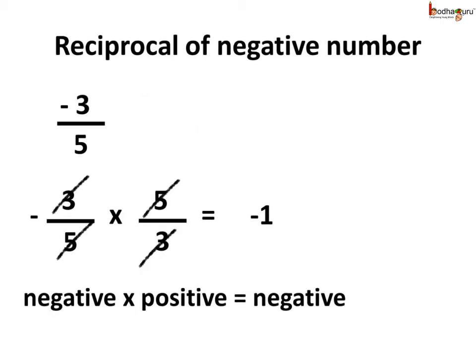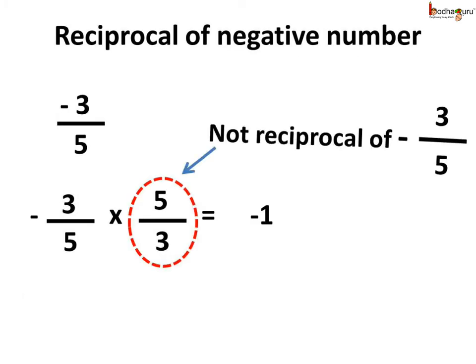Now, rational numbers can be negative too. What is the reciprocal of a negative number? Like, minus 3 by 5 — what is the reciprocal of it? If we interchange places of the numerator and the denominator, we get 5 by 3. Would it be a positive or negative rational number? If we do minus 3 by 5 multiplied by 5 by 3, then 3 and 3 cancel each other and 5 and 5 cancel each other. A negative number multiplied by a positive number gives a negative result, so here the result would be minus 1, not 1. This means 5 by 3 is not the reciprocal of minus 3 by 5.